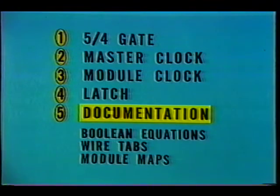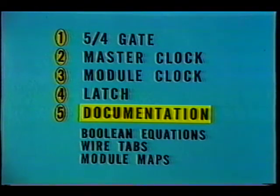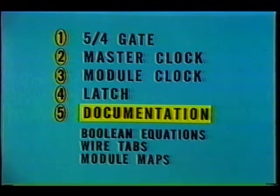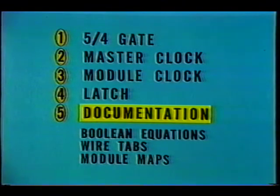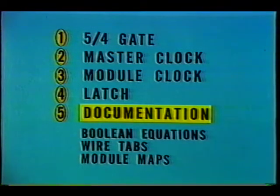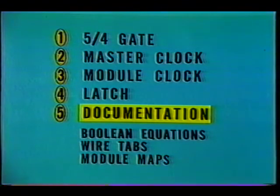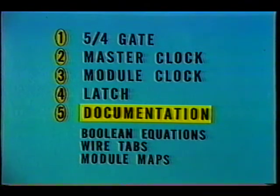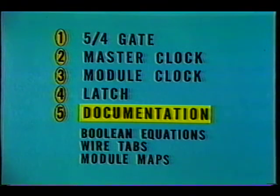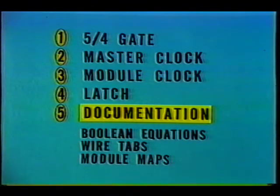The last unit describes the use of most of the basic maintenance documentation for the Cray 1. It starts out with a description of the Boolean equations, which are algebraic expressions of logical operations and are used in place of logic diagrams. The wire tabs provide a means of tracing signals between modules. The module maps provide a means of physically identifying the location of a chip given its Boolean equation.